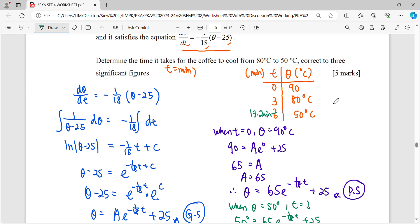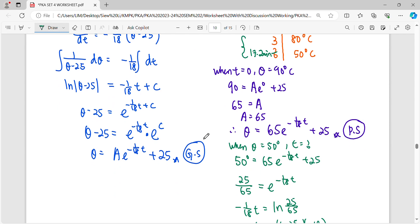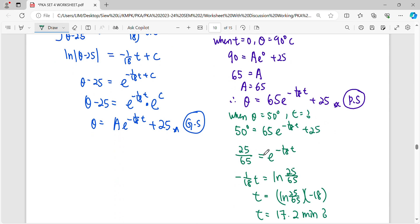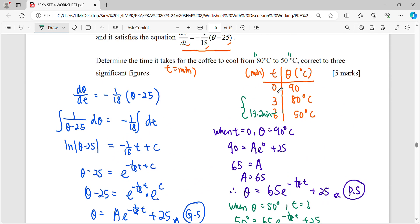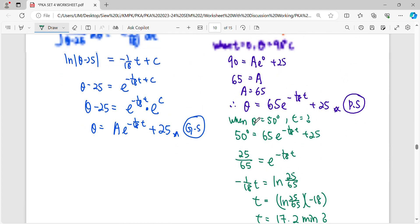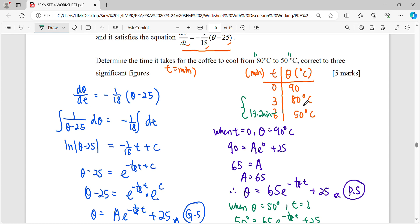When you read the question carefully, they say determine the time taken from it to cool down to 80 celsius to 50 celsius. So our story timeline is referring to 90 celsius. So the 17.2 is referring from 90 celsius come to 50 celsius. So it takes as much as 17.2. When you want just from 80 celsius to 50 celsius.